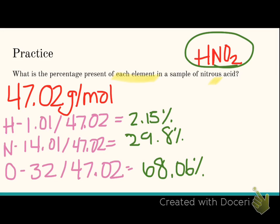Then take each element, divide by the total. So for hydrogen, we should get 2.15%. Nitrogen, 29.8%. Oxygen, 68.06%. I hope that what you did is you checked your answer. Go ahead and add up your percentages. If you got the same ones that I did, you're looking at 100.01%, which is right where we want to be. If you're off a little bit, maybe you wrote a number down wrong. Maybe you only used one of the oxygens. Go back and check.